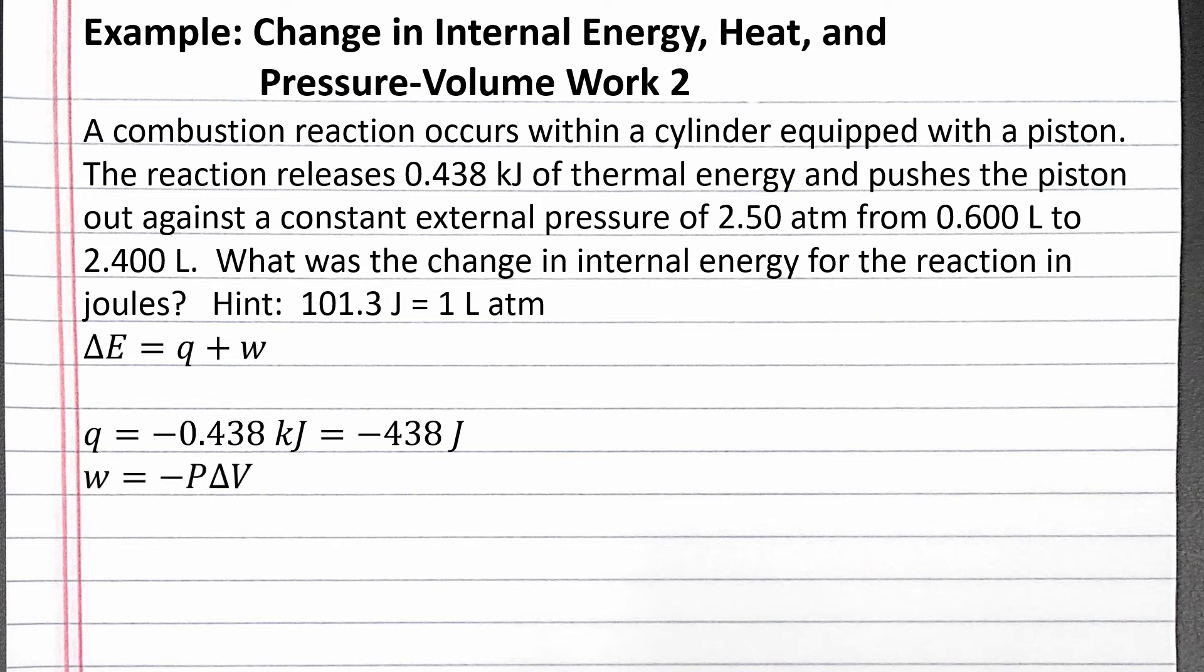Our equation for work is w equals negative PΔV, where P is the external pressure and ΔV is the change in volume. Plugging in our numbers from the problem, we can calculate change in volume as final volume minus initial volume. Our work is negative 4.5 liter atmospheres.